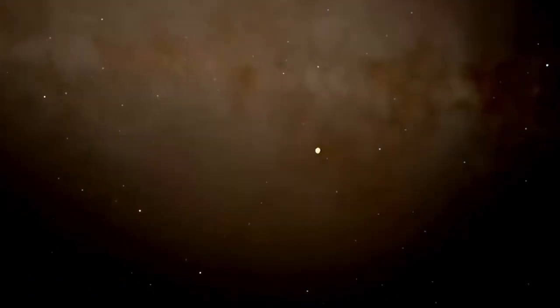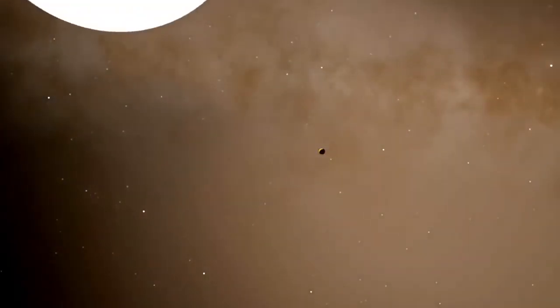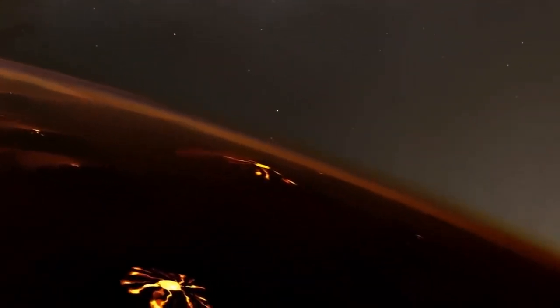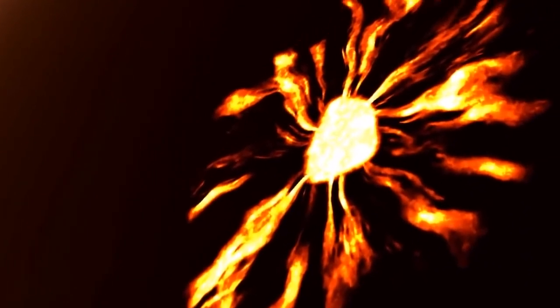Fomalholt. It's a directly imaged extrasolar object and former candidate planet found near the A-type main sequence star Fomalholt in the constellation Piscis Austrinus, about 25 light-years away. The background star, represented by a red dot, can also be seen due to the sharp clarity of the image. Now that's interesting, right?